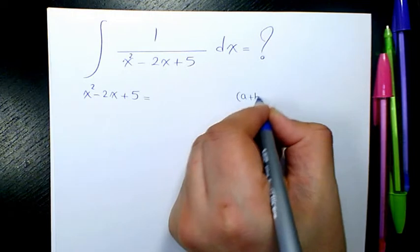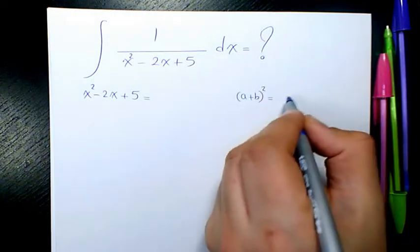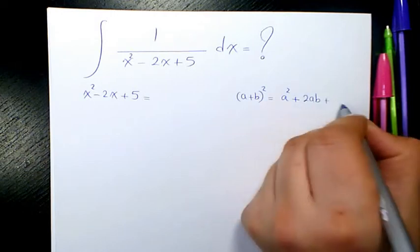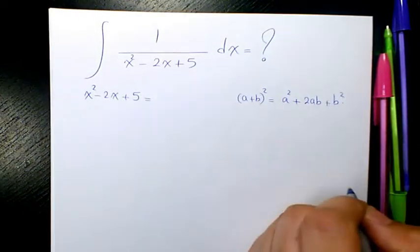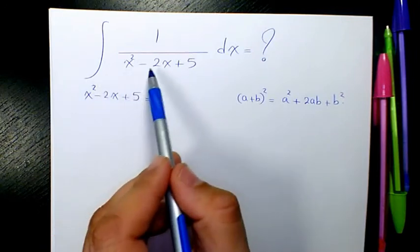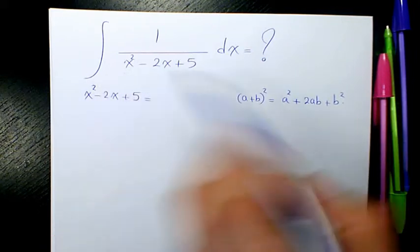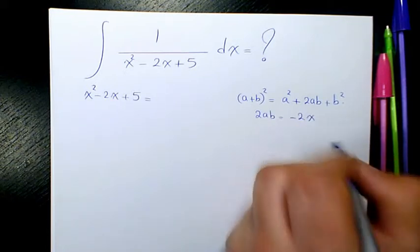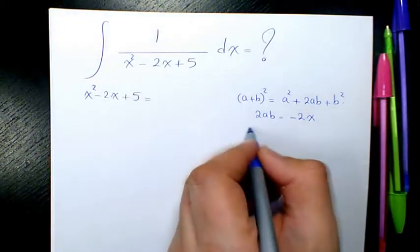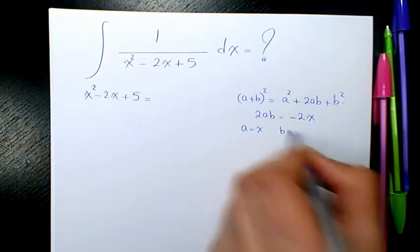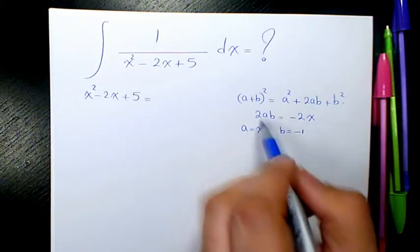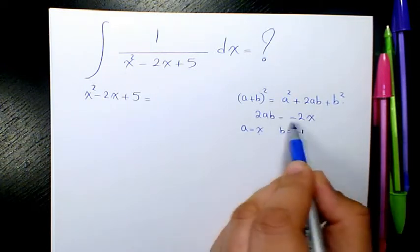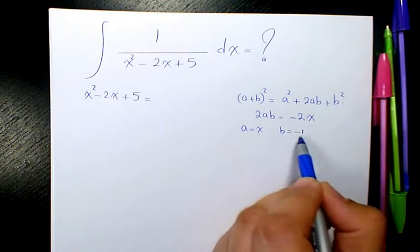You know a plus b to the power of 2 will be a squared plus 2ab plus b squared. We have the same thing in here. So here we have 2ab equals negative 2x. In this case a is x so b will be negative 1. Because 2 times a times b is 2 times negative 1 times x, which is negative 2x. So b is negative 1.